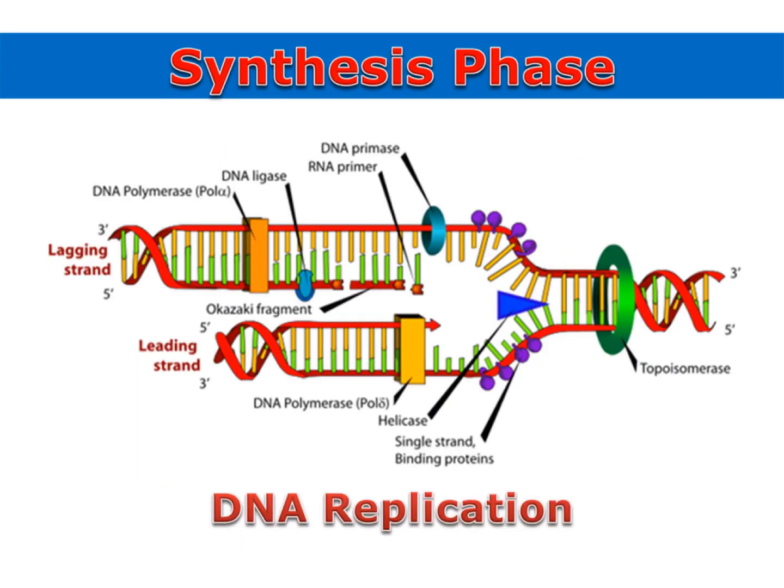Before DNA replication can occur, the DNA must first unwind and be separated between the nitrogen bases. Enzymes then add new nucleotides to create two complete sets.